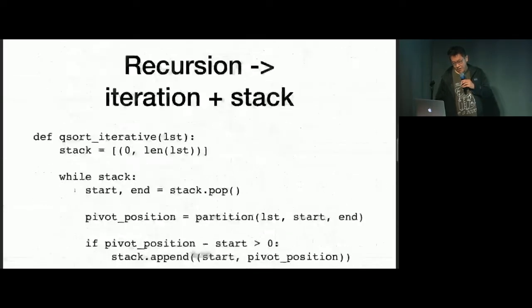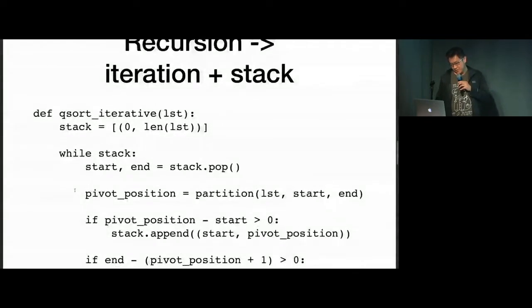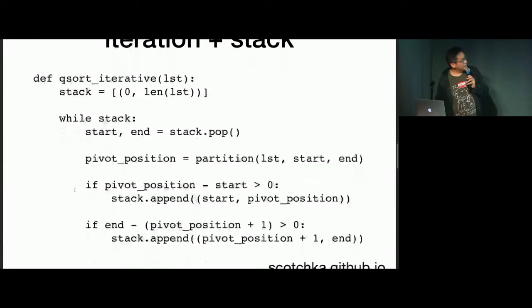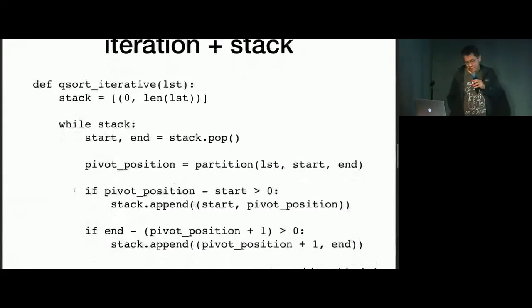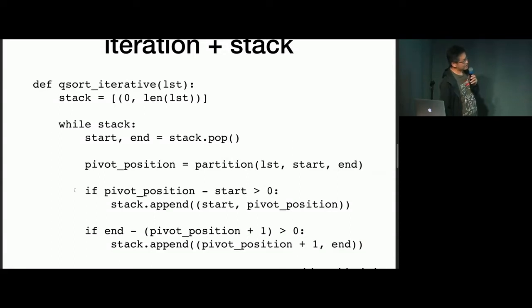And we know that you can turn any recursive implementation into an iterative implementation by maintaining the stack yourself — the call stack. And we know that for every function call, the state is only the start and end positions. So the stack is going to contain a segment of the list.